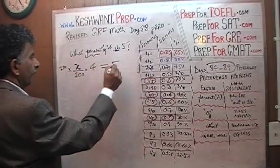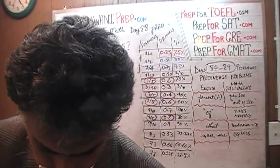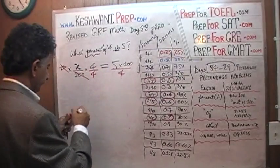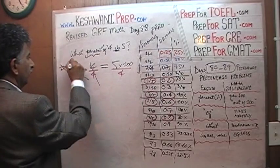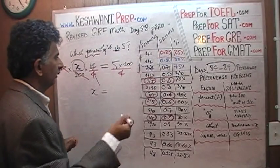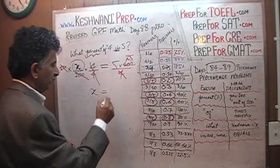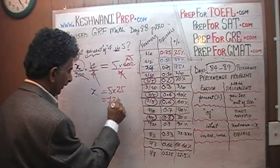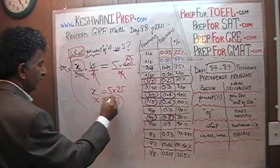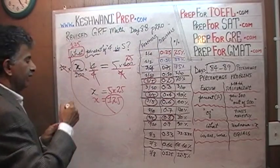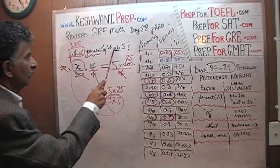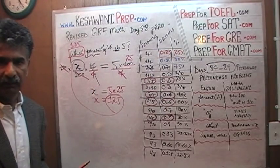Multiply both sides by 100 — that gets rid of the 100 in the denominator. Now divide both sides by 4 — that gets rid of the 4. So x equals 5 times 100 over 4. 100 divided by 4 is 25, so the final answer is 5 times 25, which is 125. So x equals 125.